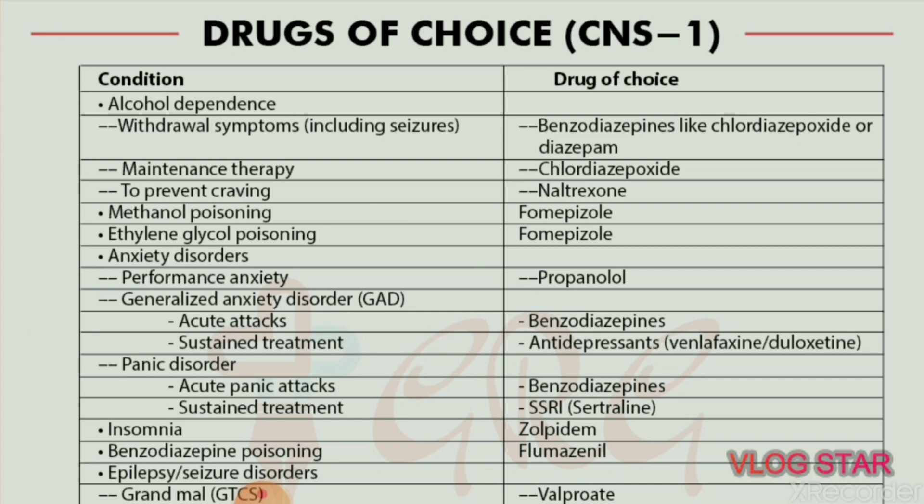First is alcohol dependence. For withdrawal symptoms including seizures, the drug of choice is benzodiazepines like chlordiazepoxide and diazepam. For alcohol dependence maintenance therapy, the drug of choice is chlordiazepoxide. To prevent craving in alcohol dependence, the drug of choice is naltrexone.